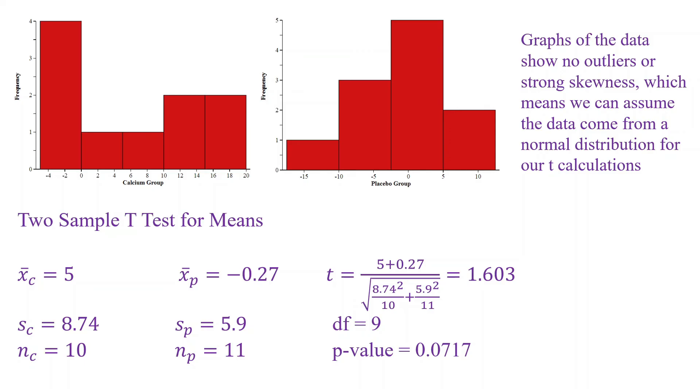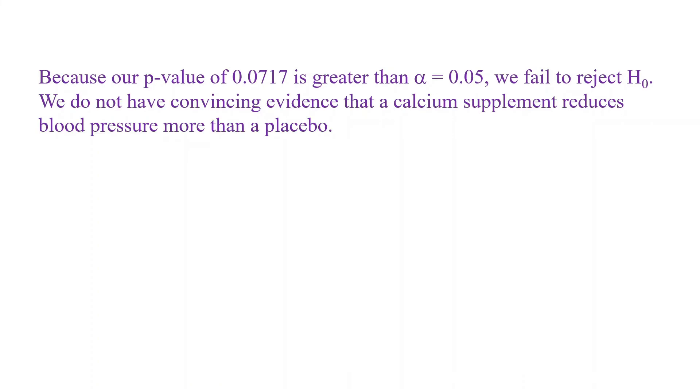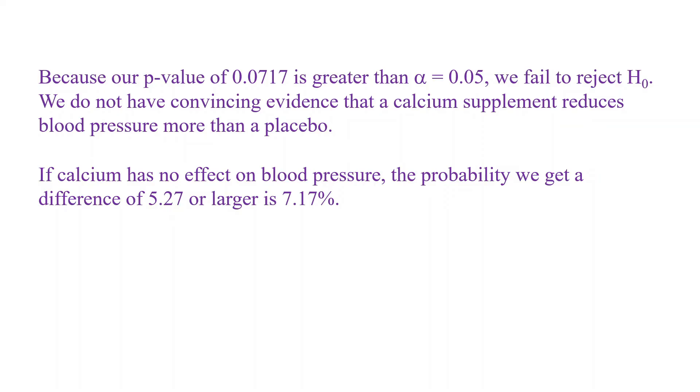Once we have our P value, we of course want to make a statistical conclusion and then our conclusion in context. So we would say because our P value of 0.0717 is greater than our significance level, we fail to reject the null hypothesis. So that's our statistical conclusion. Our conclusion in context, then we would say we do not have convincing evidence that a calcium supplement reduces blood pressure more than a placebo. And then our question also wanted us to interpret the P value we got in the context of this experiment. So we would say if calcium had no effect on blood pressure, the probability we get a difference of 5.27 or larger is 7.17%. Now you don't necessarily have to report this number. This was the difference between the two groups. But you could just not report that number. I just wanted to kind of be thorough and say that we could throw that in there as our interpretation with our P value.